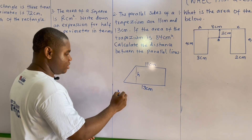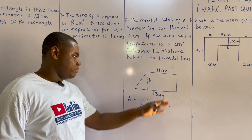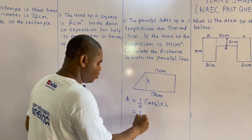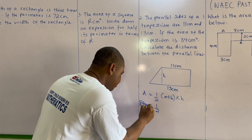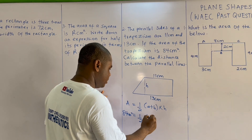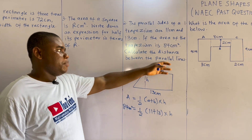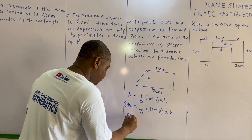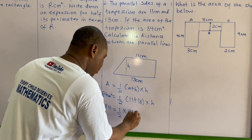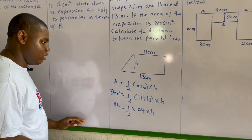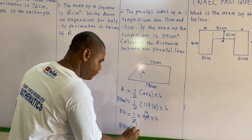The area of a trapezium is one-half times (a plus b) times height. Here a is 11 centimeters and b is 13 centimeters, and the area is given as 84 centimeters squared. So 84 equals one-half times (11 plus 13) times h. Since 11 plus 13 equals 24, that gives 84 equals one-half times 24 times h, and 24 divided by 2 is 12.